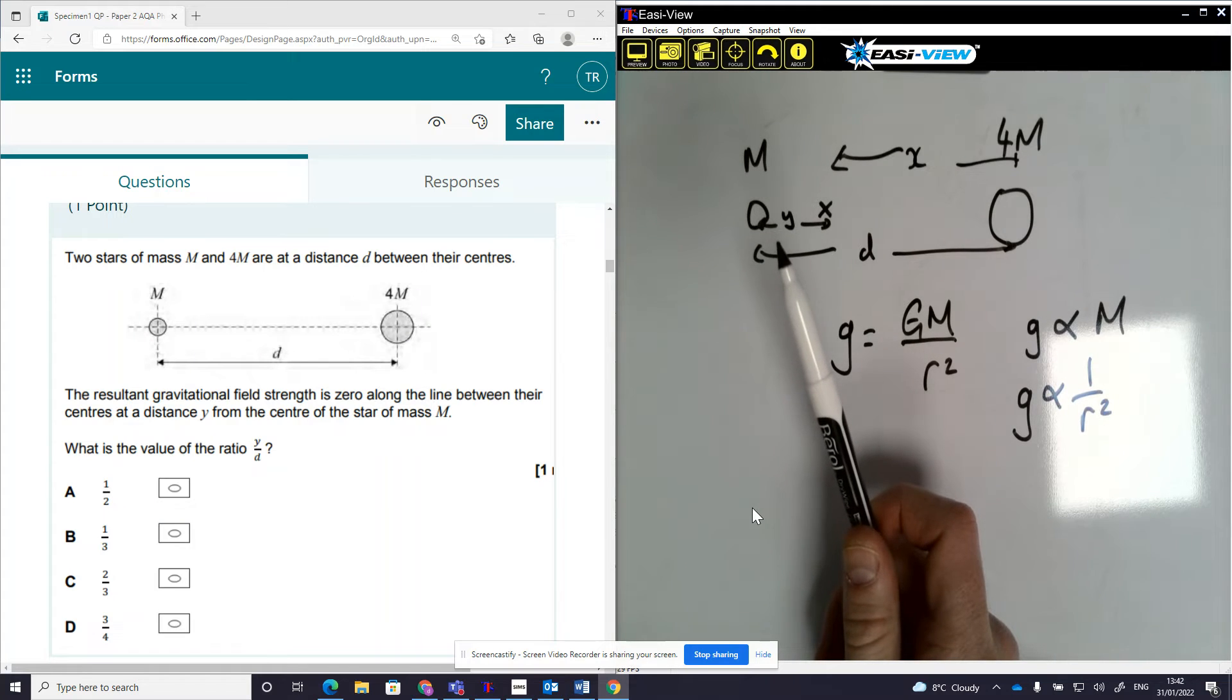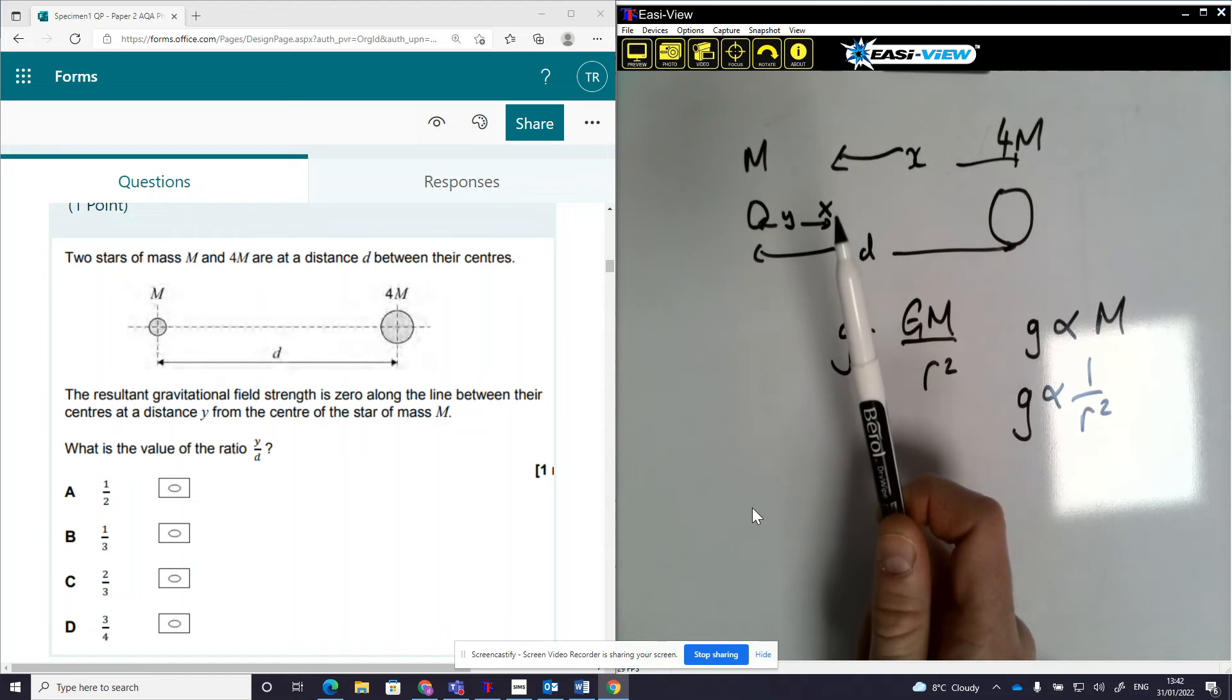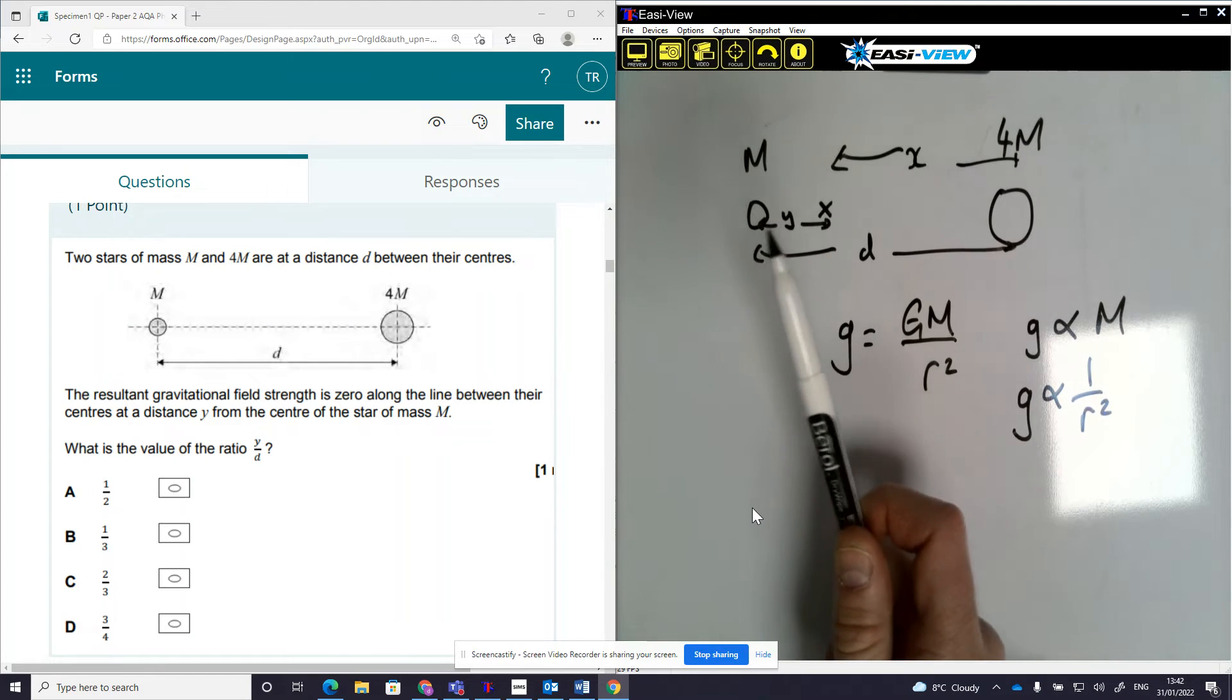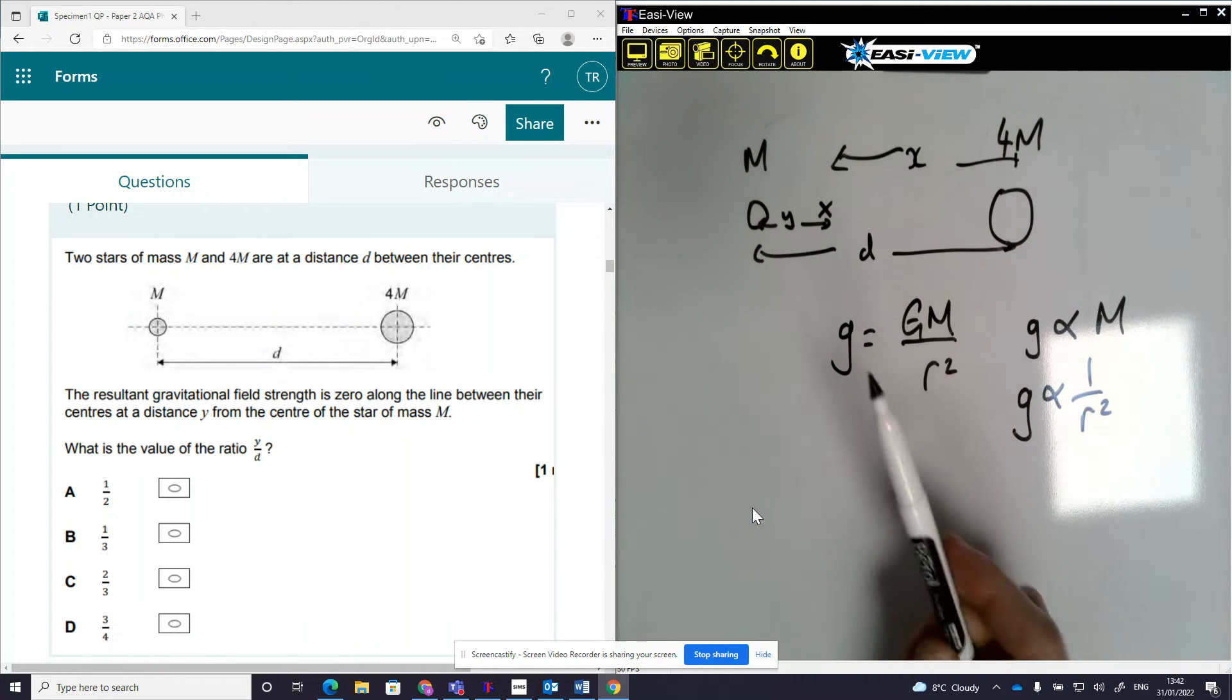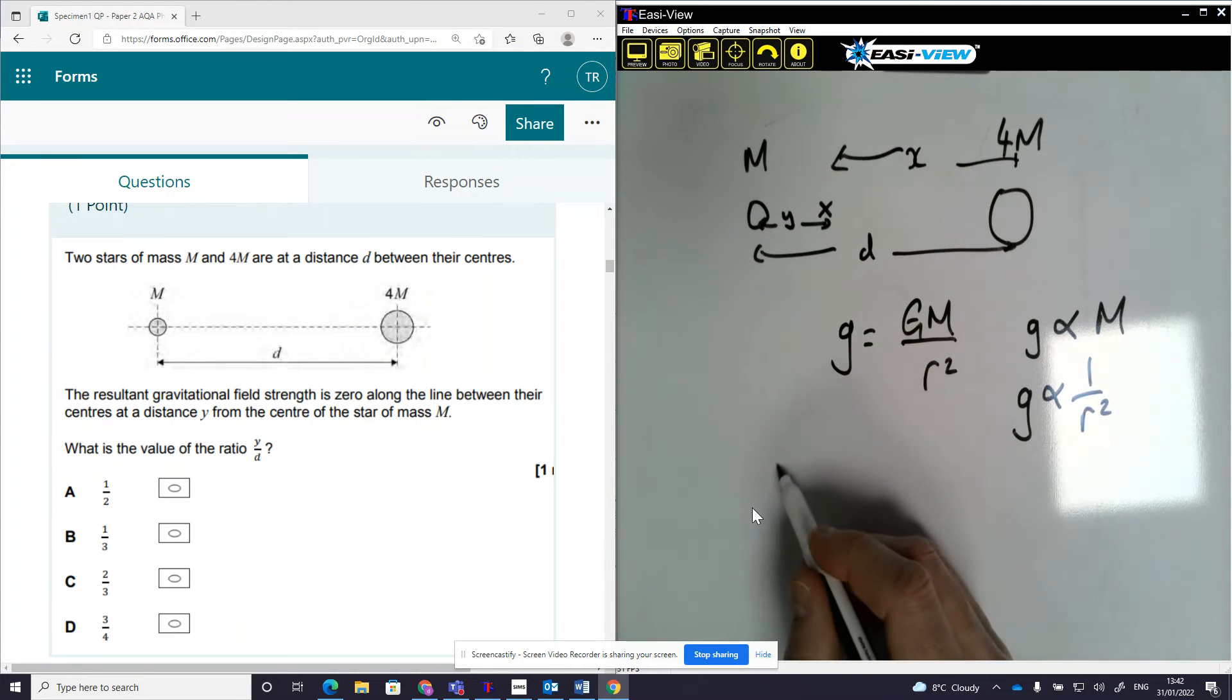So it being half the distance, one over R squared, that will give me four times the attraction if it's half the distance. So I know that two lots of Y equals X.